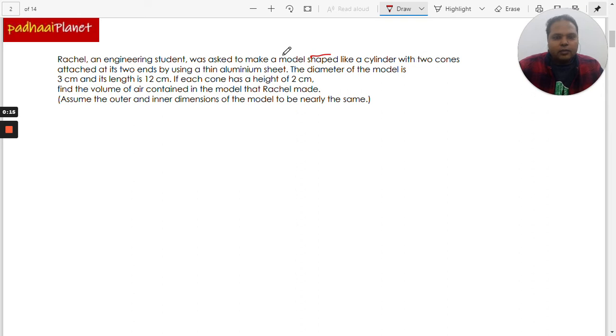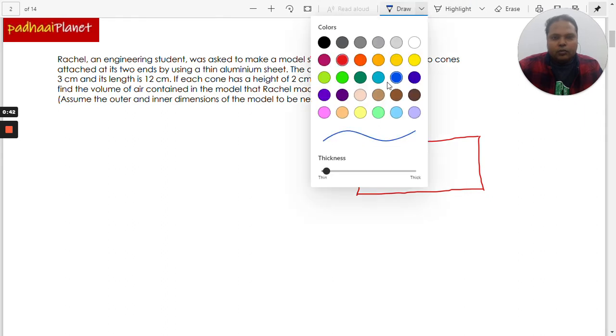It looks something like this. Let's try and draw this. So suppose this is the cylinder. This cylinder is like this, this is how it would look.